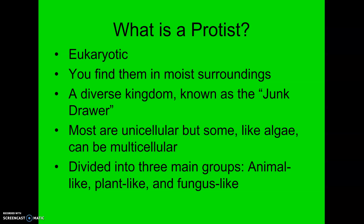Every other kingdom — protista being the first one we're going to be talking about — is going to consist of eukaryotic cells. So they're about 10 to 100 times bigger, they have a nucleus, they have all the cell machinery, all that sort of stuff.